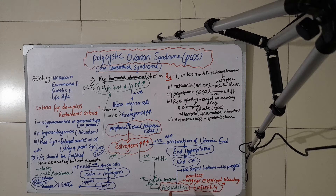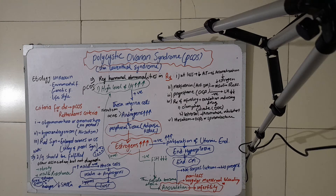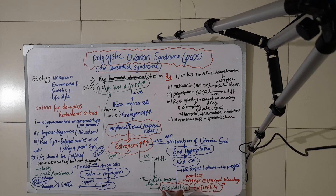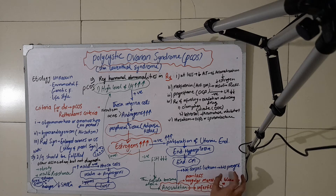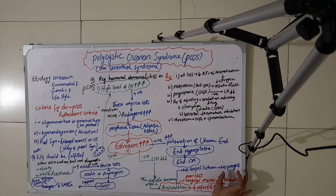The anovulatory state is mainly painless, and patients may also have irregular menstrual bleeding. Because ovulation is not happening, no corpus luteum is formed from the remnant cells. When no corpus luteum is present, there is no production of progesterone, so progesterone levels are also decreased.